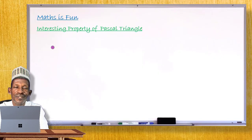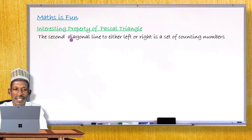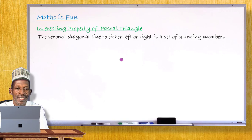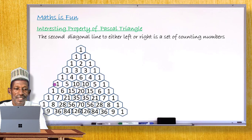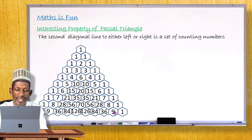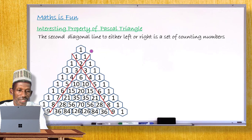Now, another interesting property of Pascal's Triangle. This property says: the second diagonal line, going diagonally down to either the left or right, contains a set of counting numbers — that is, 1, 2, 3, 4, 5, 6, 7, 8, and so on. Looking at the Pascal's Triangle, you can see this second diagonal line clearly on either side.